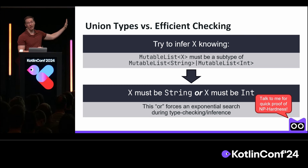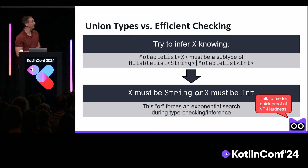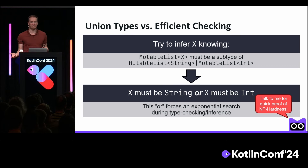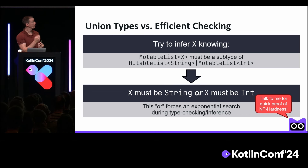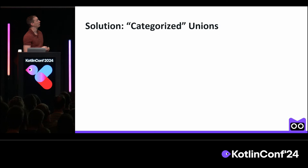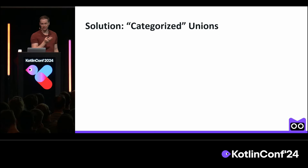So that's the reason why we're not planning on adding arbitrary union types to Kotlin. But that doesn't mean union types don't have any value — this is about the theory of union types. What about the practice? Why is it that people are asking for union types? We looked through a bunch of use cases and found that many of them can be solved by using a restricted notion that I'm inventing and declaring now, called categorized unions.